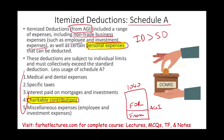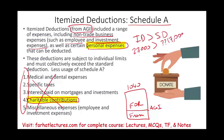You add up all of your itemized deductions — let's assume they total $22,000 — then you compare this to your standard deduction. The standard deduction is a number given by the government based on your filing status. If it happens to be $25,000, you don't use the itemized deduction. If it's $17,000, then you would use the itemized deduction.